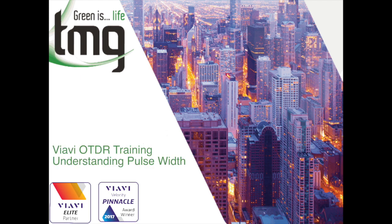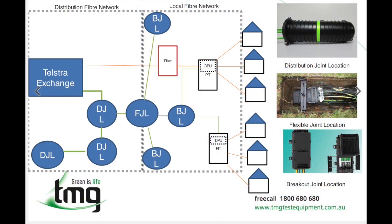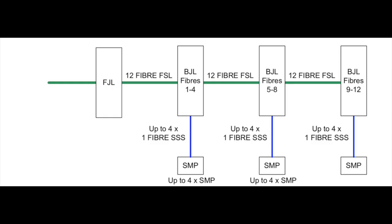Today we're going to be discussing how to set up your OTDR with the correct pulse width for testing on the LFN part of the network — specifically testing from the DPU back to the FJL through a splitter, i.e. a BJL or maybe the multipool. These splitters come in a variety of forms: they could be 1-4 way, 1-8 way, or maybe even a 1-12 way.